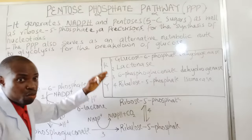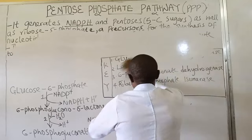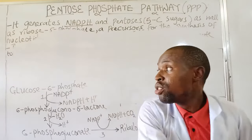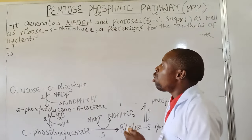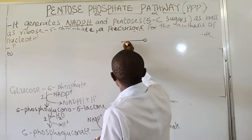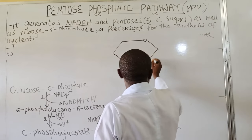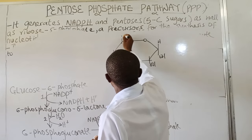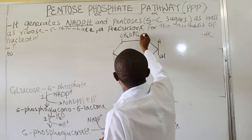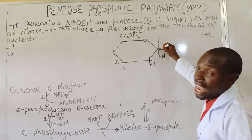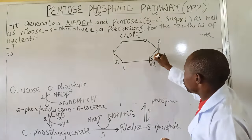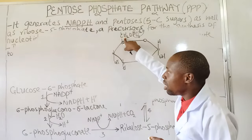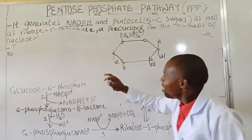So let me draw some for you. The first one I'll draw is glucose-6-phosphate, which is in cyclic form — take note. This is one, two, three, four, five, six, and the phosphate group is at the 6-carbon. So that's what is called glucose-6-phosphate.